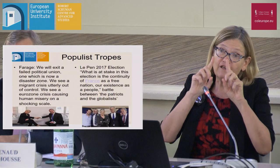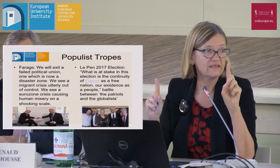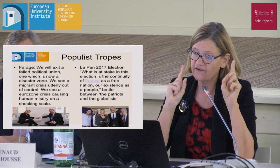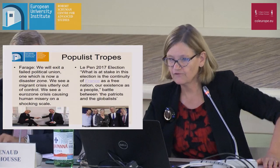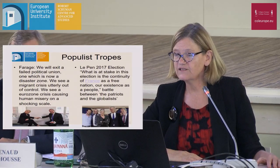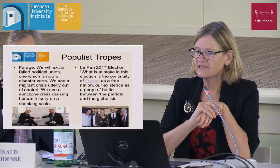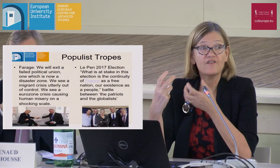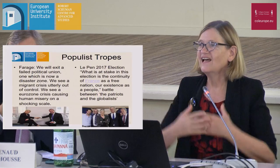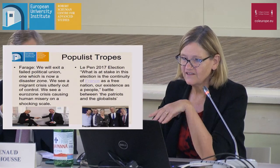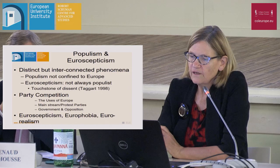Looking at how populists talk about the EU, you see the tropes: 'failed political union,' 'disaster zone,' 'utterly out of control,' 'human misery on a shocking scale' — that is the language Farage uses to describe this system. Very frequently, populists compare the EU to the Soviet Union. When you find foreign ministers of countries beginning to do this, you know it's taken over. A quote from Le Pen from the 2017 election: 'What is at stake is the continuity of France as a free nation, our existence as a people. It is the battle between us, the patriots, and the globalists — or the EU.'